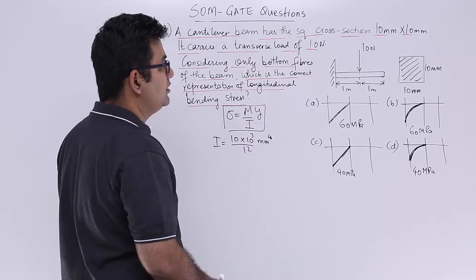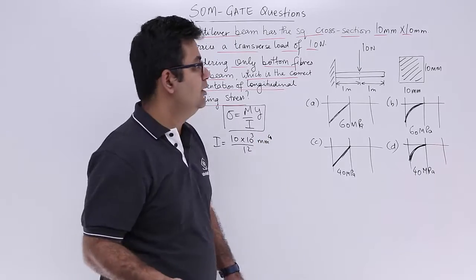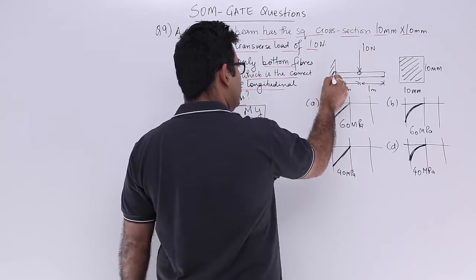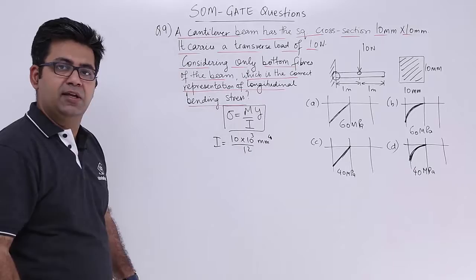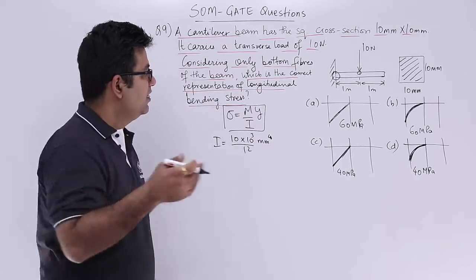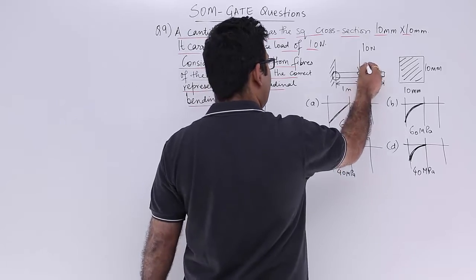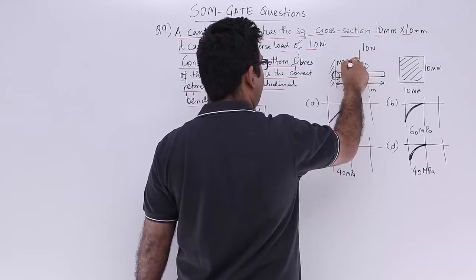Now you can see that the bending moment is basically 0 at the mid span and it is maximum at the leftmost end of the beam which is the fixed end. So this will be 0 over here and you will have the maximum bending moment over here.